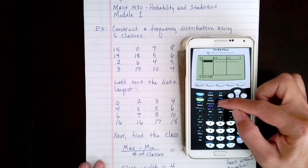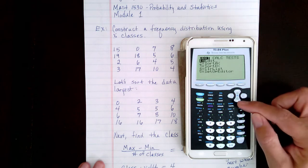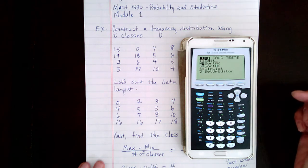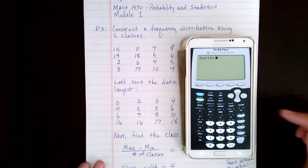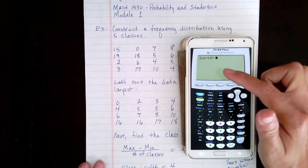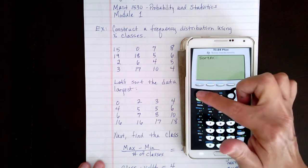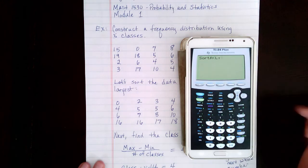Then hit STAT again, go down to sort A, that's number 2, hit Enter, and then tell the calculator you want to sort List 1. So you hit 2nd, List 1, Enter.